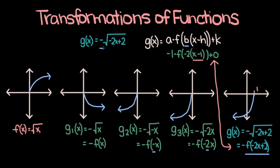Just to recap: the first negative sign caused us to flip f of x over the x-axis, then because of the second negative sign we flipped that over the y-axis, the negative 2 caused a horizontal compression, and then the plus 2 ultimately caused a shift one unit to the right. So in the end, g of x looks like this. Just like in the last example, we were able to break up the process of graphing this function into multiple steps, isolating each individual transformation. One last piece of advice: you usually want to start off with the reflections and the vertical and horizontal stretches and shrinks, and then leave the translations for the end.